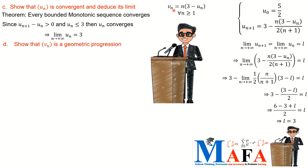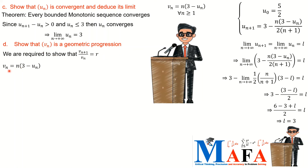We now have a new sequence v_n defined as v_n equals n times (3 minus u_n) for all n greater than or equal to 1. We must show v_n is a geometric progression by showing v_{n+1} divided by v_n equals a constant common ratio. We compute v_{n+1} by replacing n with n+1: v_{n+1} equals (n+1)(3 minus u_{n+1}). We can find (3 minus u_{n+1}) from the recurrence — rearranging u_{n+1} gives (3 minus u_{n+1}) equals a specific expression in u_n and n.